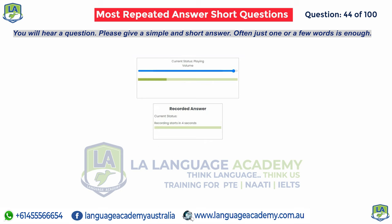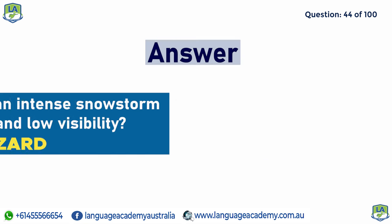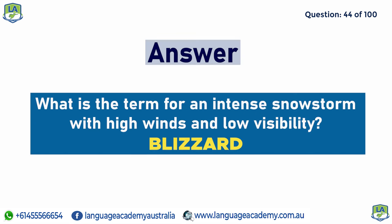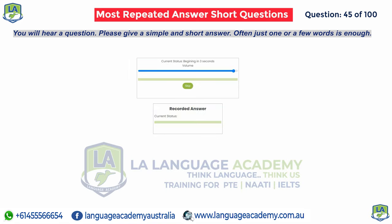What is the term for an intense snowstorm with high winds and low visibility?